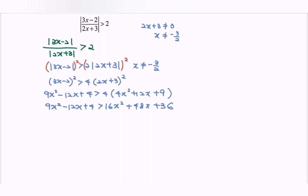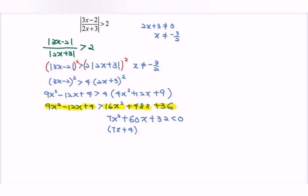Kindly simplify the situation. From here: 16x squared minus 9x squared gives 7x squared. Then 48x plus 12x gives positive 60x. Next, 36 minus 4 gives plus 32. So we have 7x squared plus 60x plus 32, less than 0. Kindly factorize: (7x plus 4)(x plus 8) less than 0.